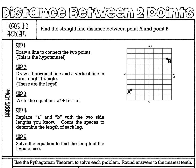Here's the problem. We're going to find the straight line distance between point A and point B. So step one is we're going to draw a line to connect the two points. You're going to take something straight and simply draw a line from point A to point B.